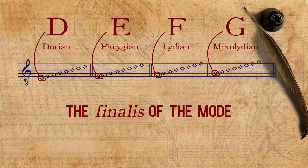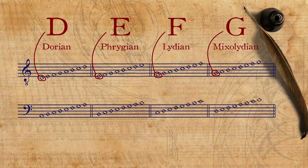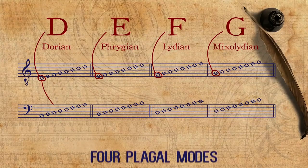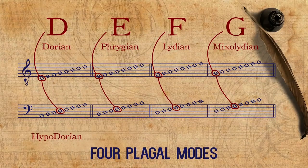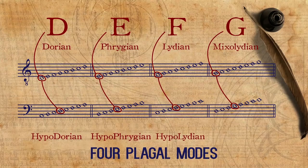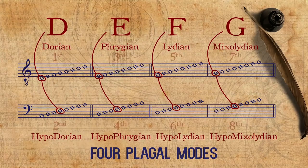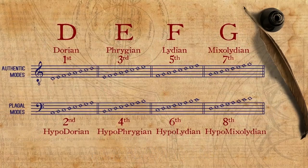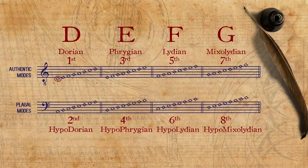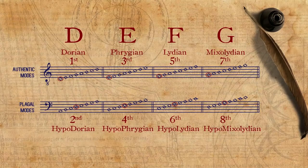Now if we put the species of fourths below the species of fifths, we get the four plagal modes: Hypodorian, Hypophrygian, Hypolydian, and Hypomixolydian. These eight groupings, which are based on the four different finalis notes D, E, F, and G, are the famous eight modes.